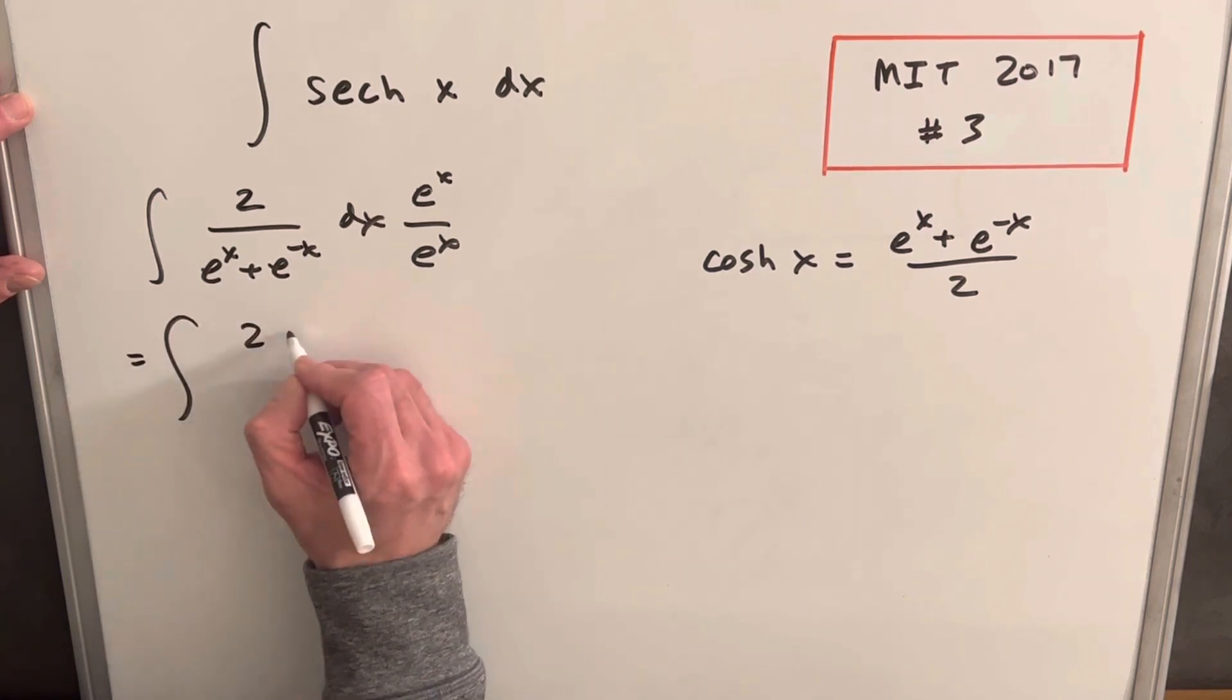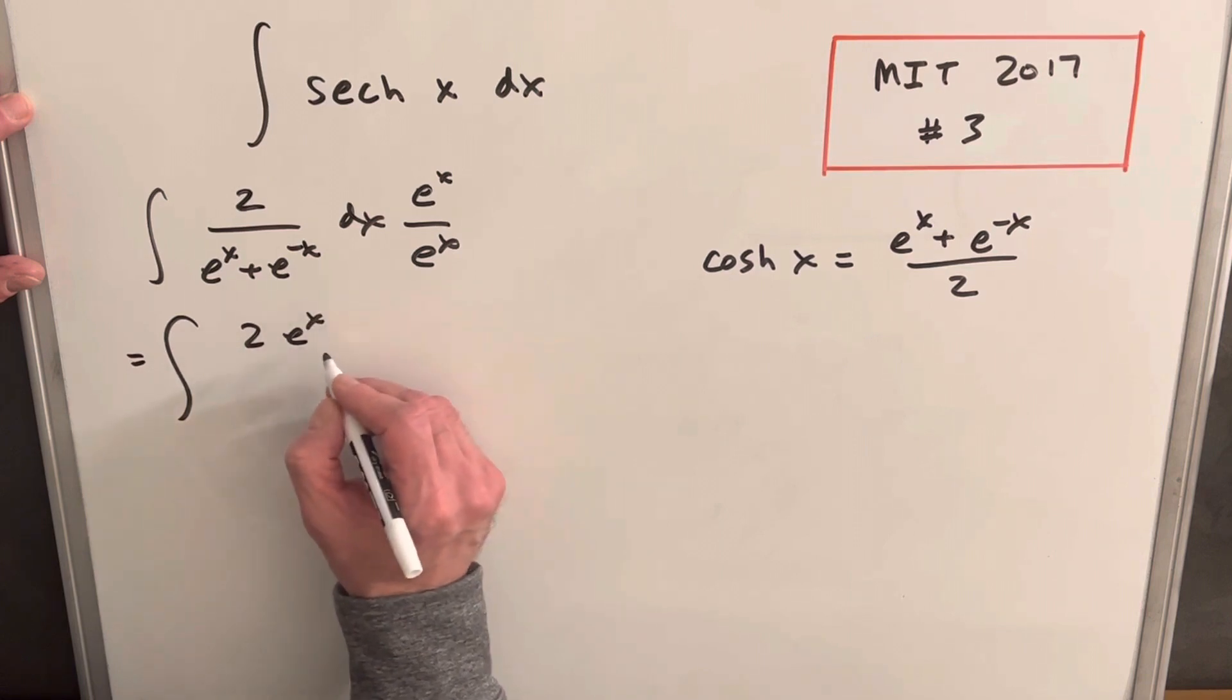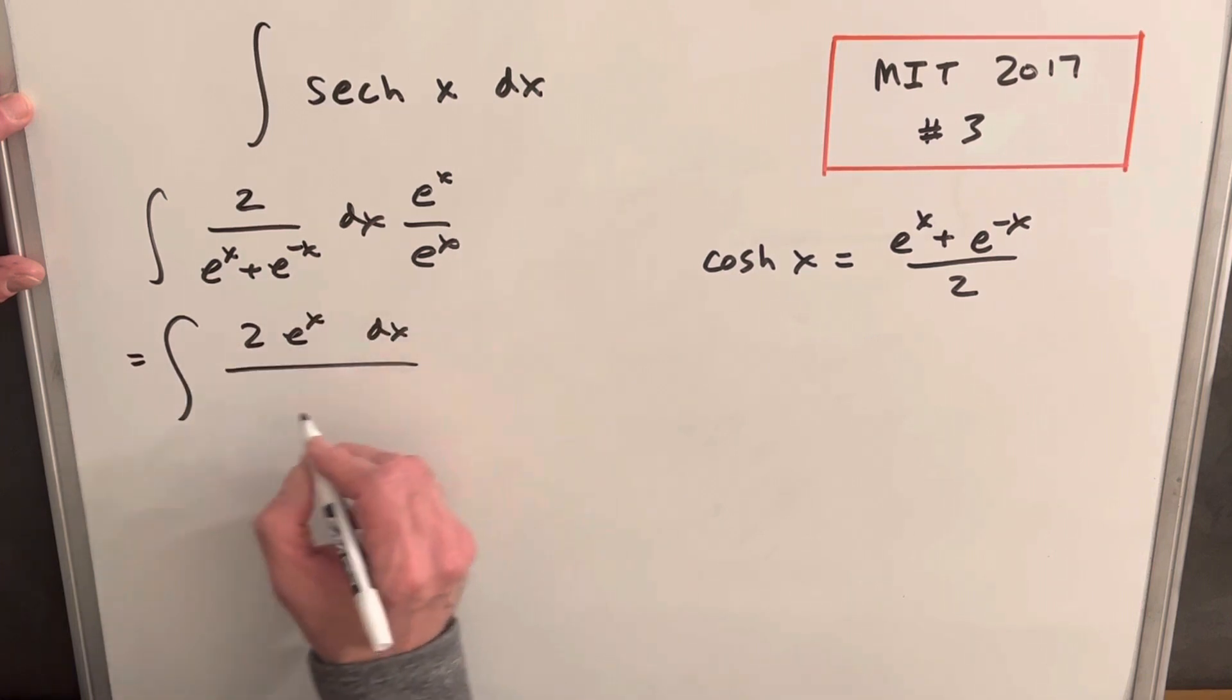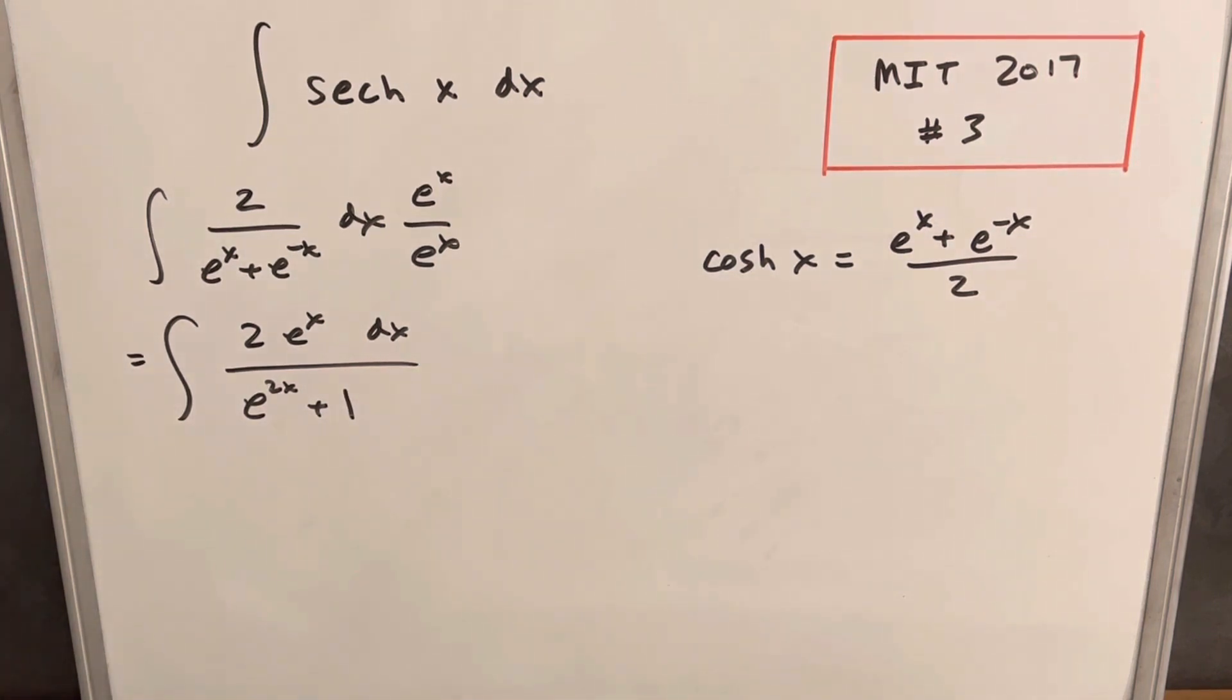Let's see what we get. We have 2 e to the x dx over e to the 2x plus 1. The beautiful thing about e to the x is the derivative is e to the x and the integral is e to the x, so we can use that for a u substitution.